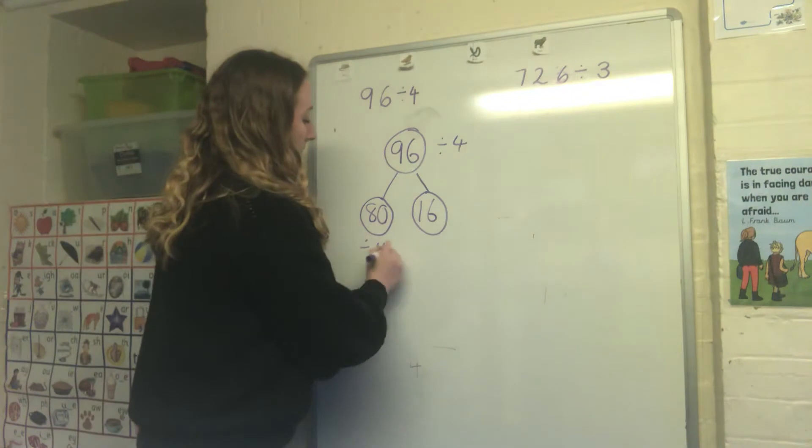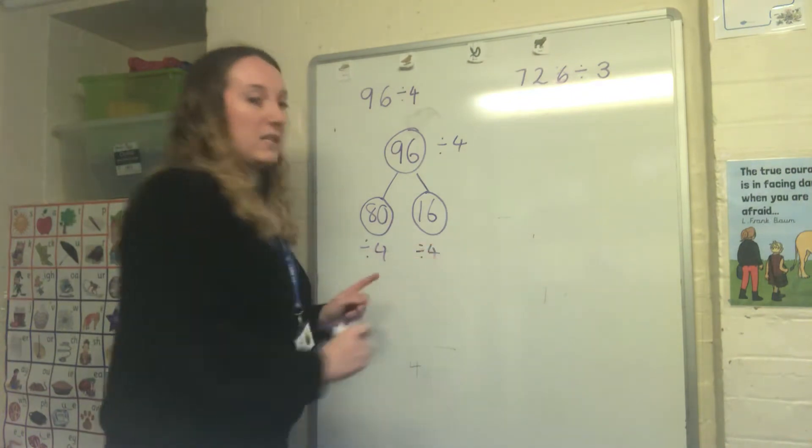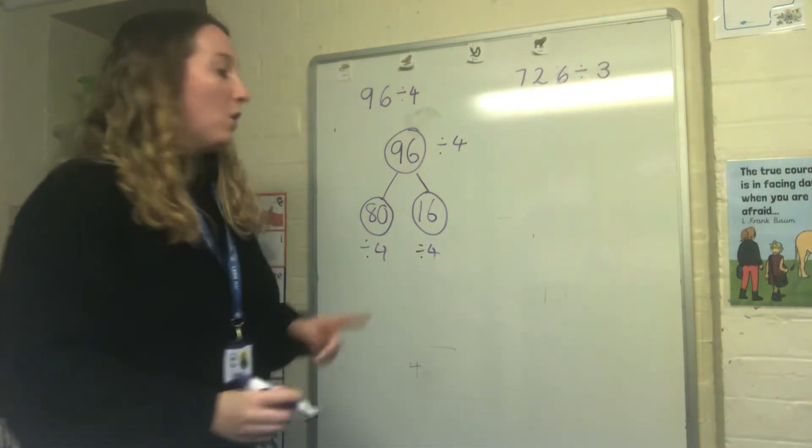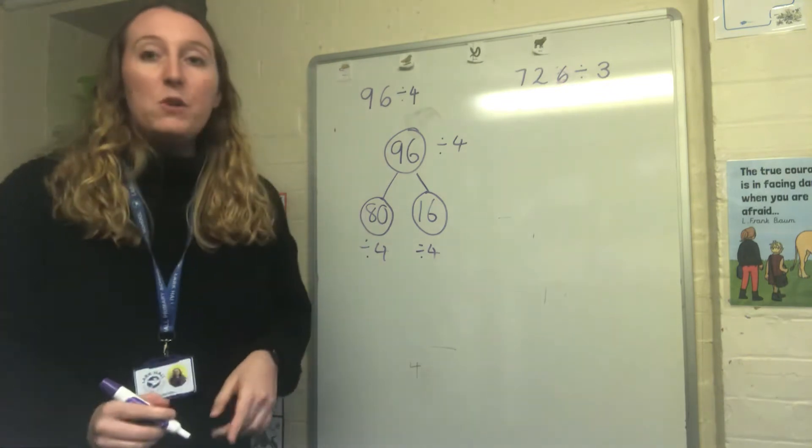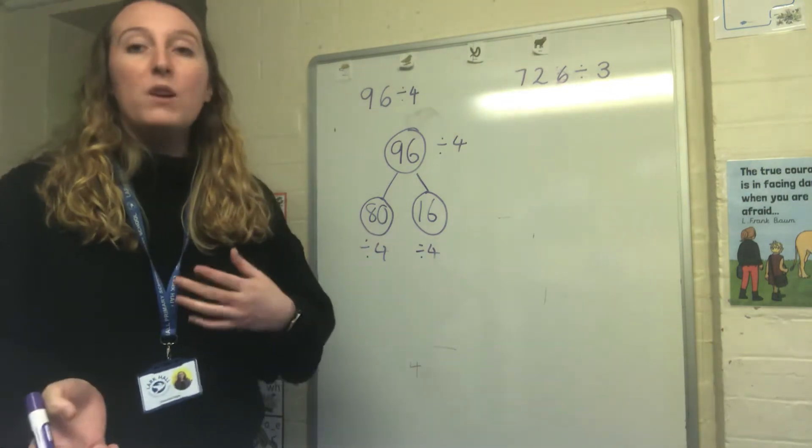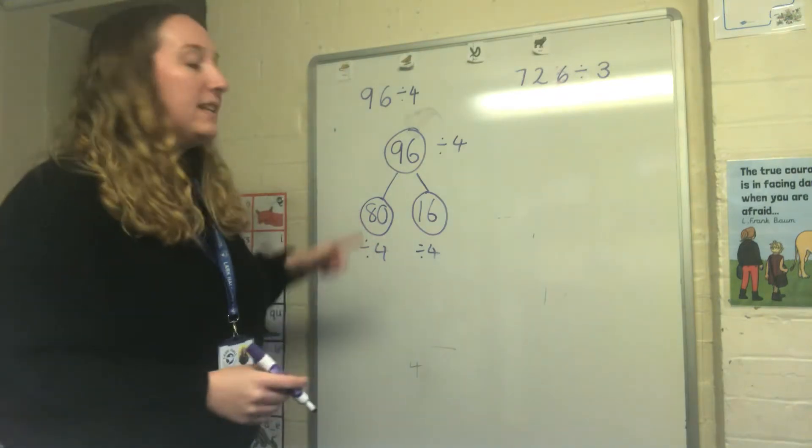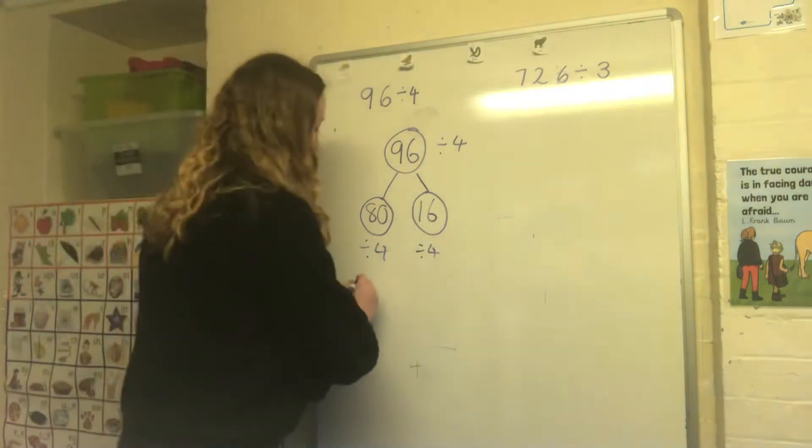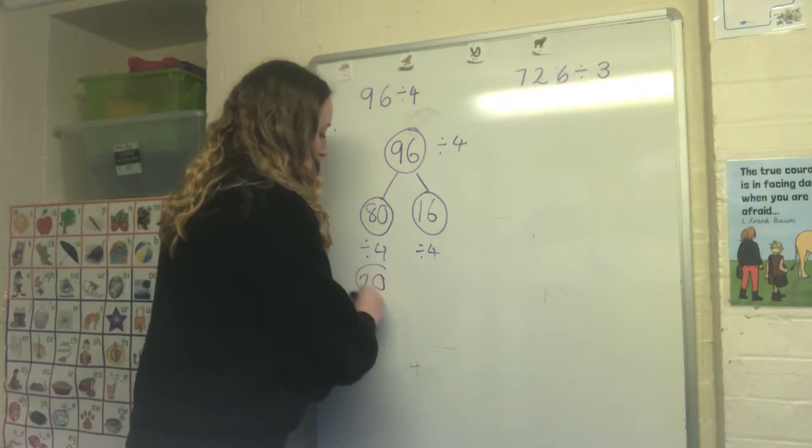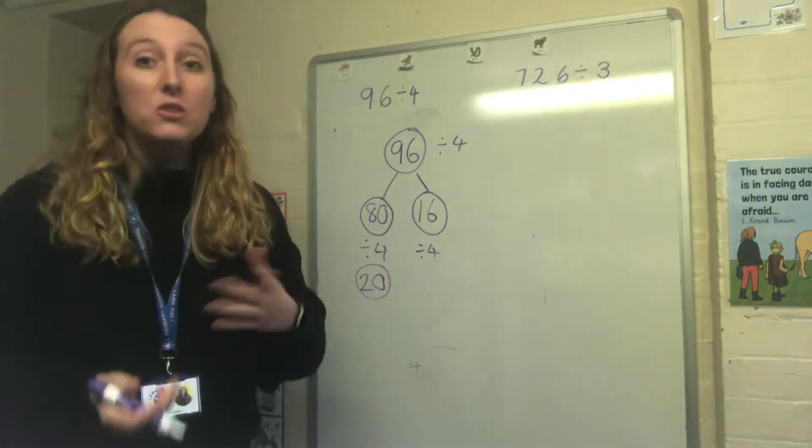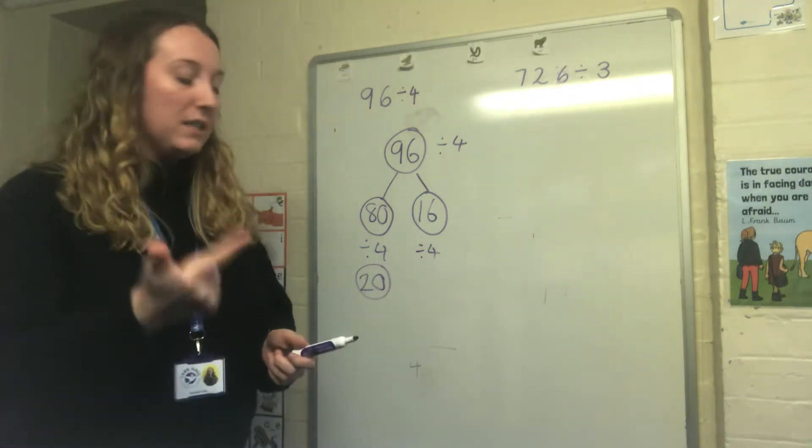So now I need to divide both parts by 4. So 80 divided by 4. I know 8 divided by 4 is 2 and 80 is 10 times bigger. So I know that 80 divided by 4 is 20. I can count up in my 20s and just double check that's correct. So 20, 40, 60, 80.